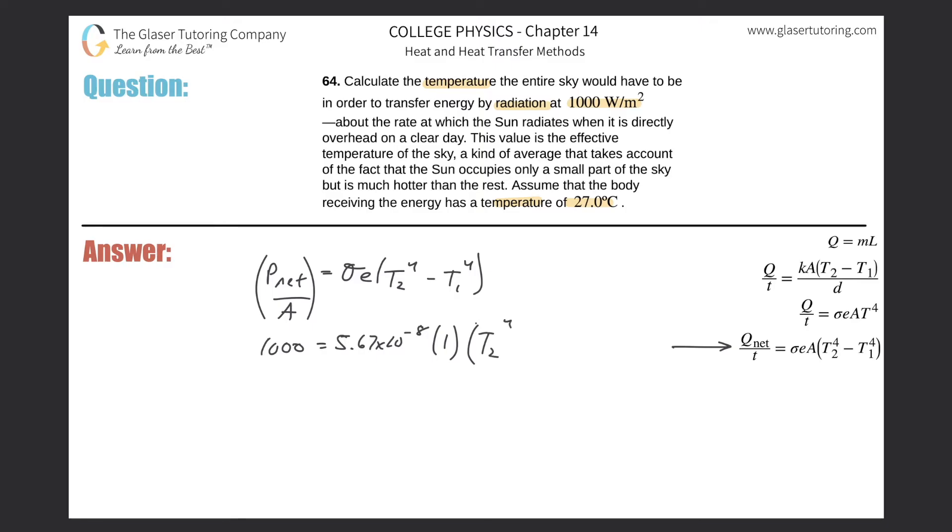And then the temperature difference, so this is going to be T₂ raised to the fourth minus—27? Whoa, just seeing if you're paying attention. We got to convert that into Kelvin, so 27 plus 273 is 300, so that's 300 raised to the fourth. Our job here is to calculate T₂, and that should be the answer.